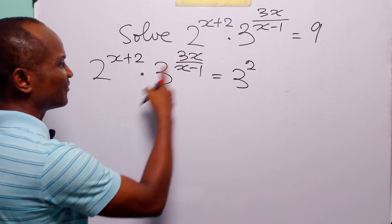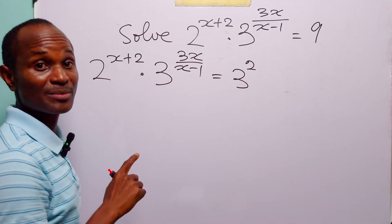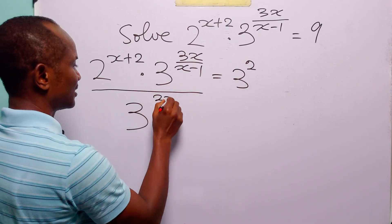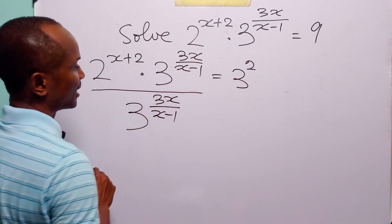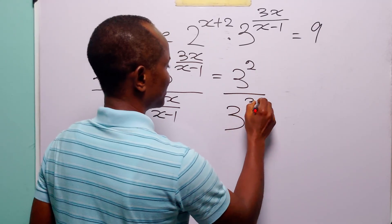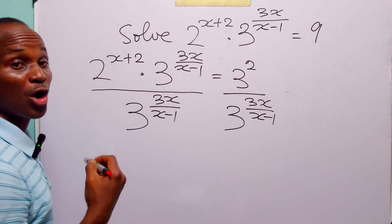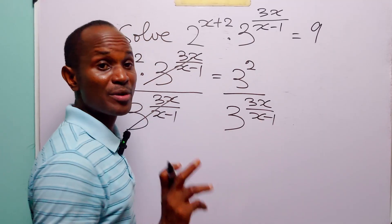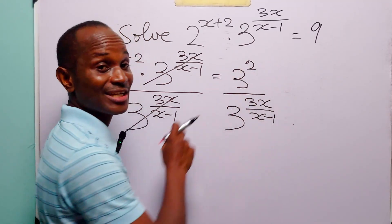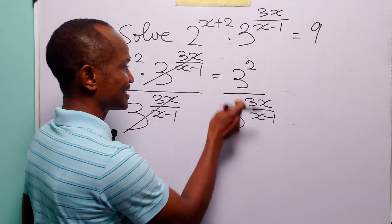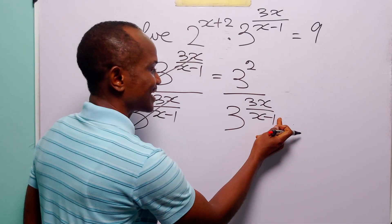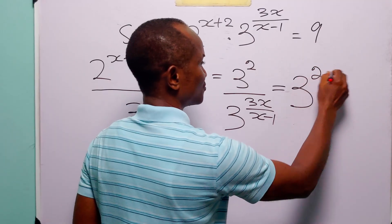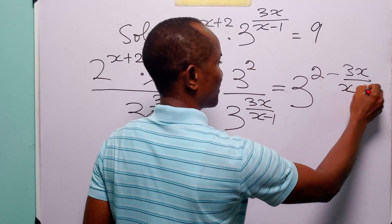Now the next thing we are going to do is divide both sides of this equation by 3 to the power 3x over x minus 1. On the left hand side we apply this division to both terms. Of course this is going to cancel. Now remember that when we have two numbers with the same base — in this case 3 — dividing each other, all we have to do is subtract the exponents. So the right hand side is equal to 3 to the power 2 minus 3x over x minus 1.